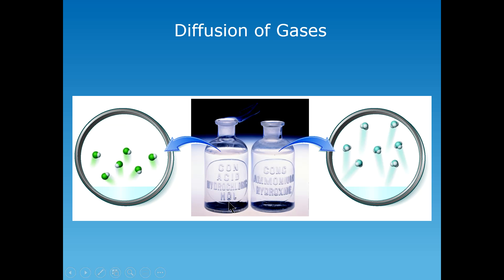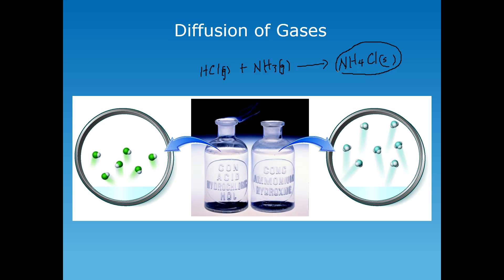These concentrated solutions will spontaneously produce gases. In the case of hydrochloric acid, above the surface of that solution it's going to produce hydrogen chloride gas (HCl), and above the solution of ammonium hydroxide, you're going to have ammonia gas produced. These two gases are going to react to form ammonium chloride, which is a solid. The smoky material is actually the ammonium chloride formed when these two gases come into contact with each other.